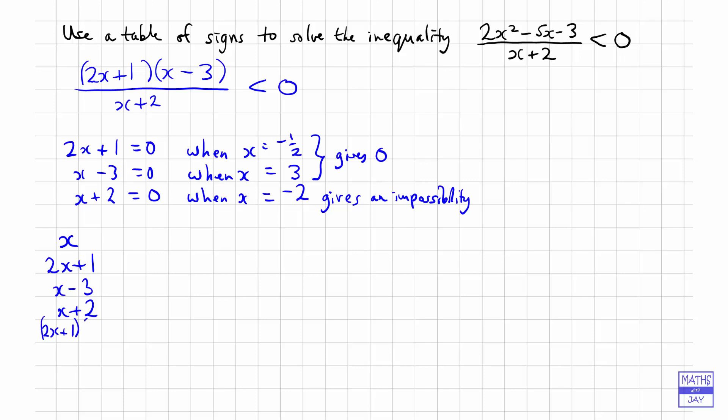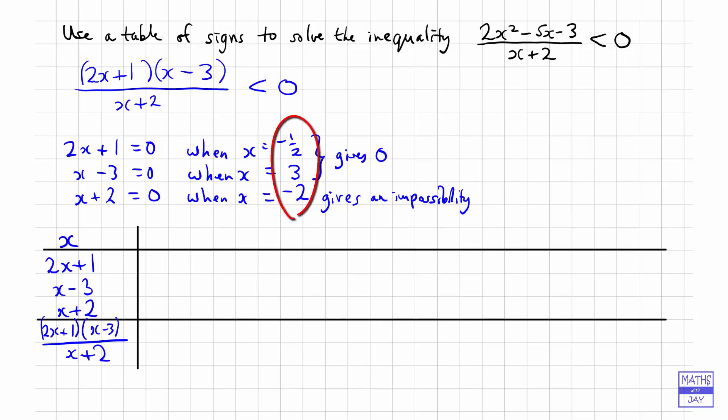So at the very end, we're going to combine everything. So 2x plus 1, x minus 3, all over x plus 2, and work out what the sign of that has to be. So let's just draw out a table. So we've labelled the rows. And the next thing we need to do is to label the columns. So we now need to look at the values x takes when the factors are equal to 0 and put them in order.